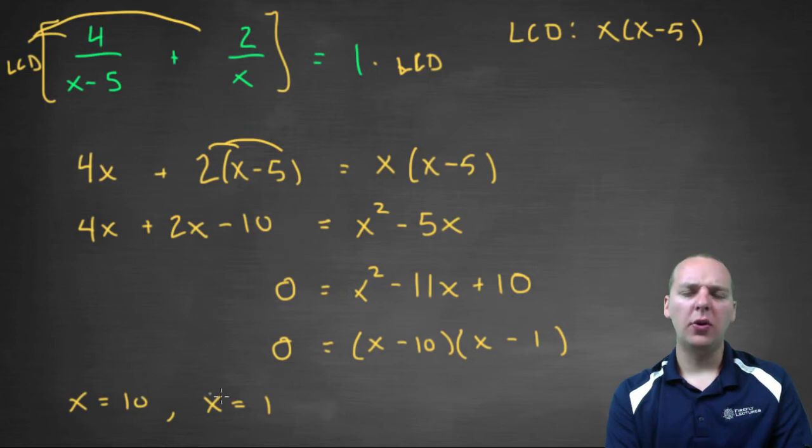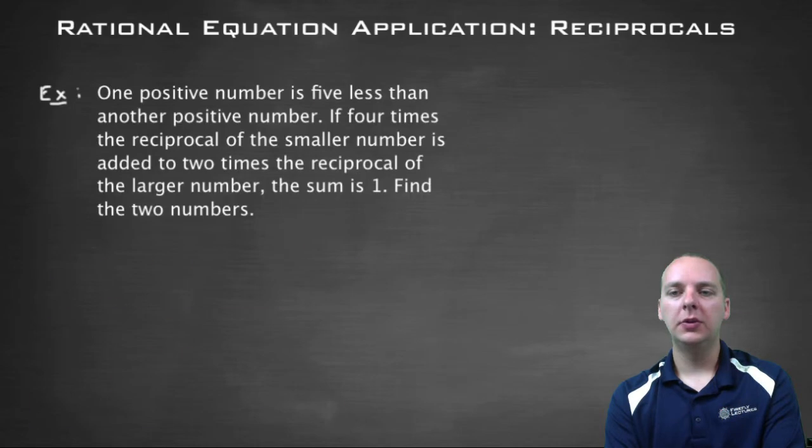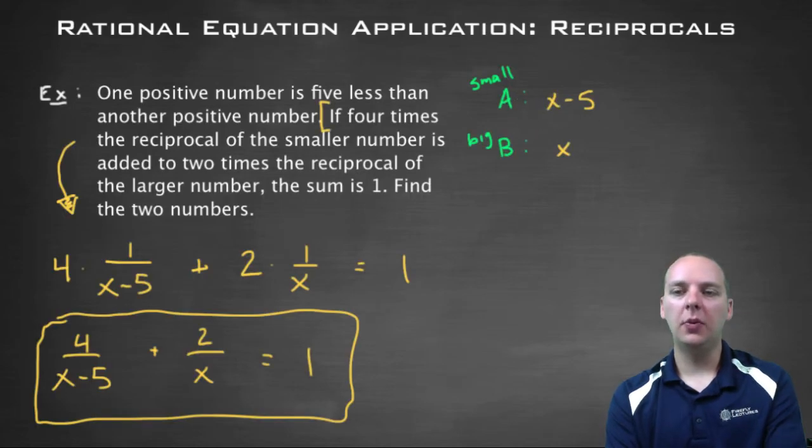Okay, now, are those my two numbers? They're not five units apart, what's going on here? What is X? So X is ten, X is one, but let's go back to the original statement, and figure out what's going on here. So we had a small number and a big number. The big number was X, and the small number was X minus five.